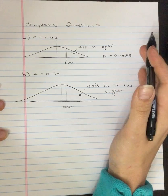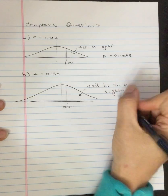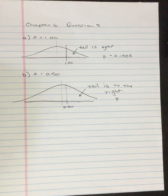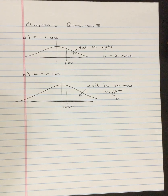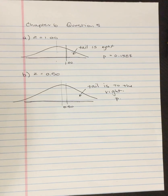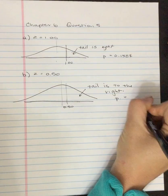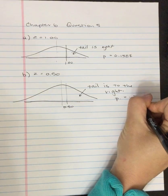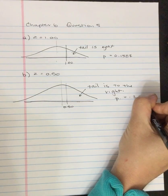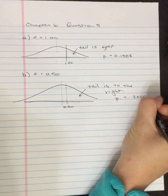If I go to the unit normal table at the back of my book, I'm going to look up 0.50 in the A column and read across to that proportion in the tail, which is 0.3085.